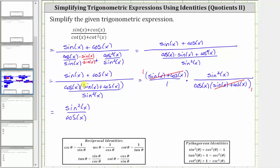To simplify this further, let's rewrite this as sine x divided by cosine x times sine x.